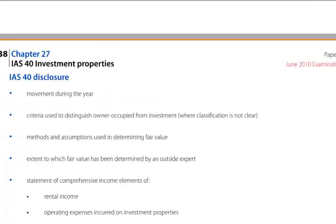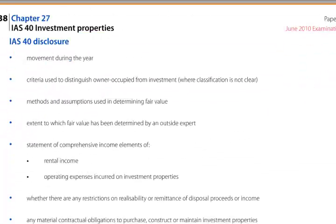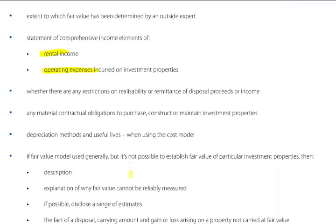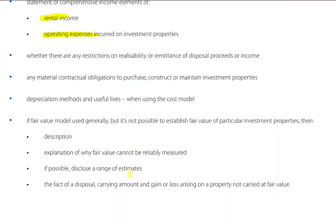For disclosure, report movements during the year, the criteria used to distinguish owner-occupied from investment property where classification isn't clear, and the methods and assumptions used in determining fair value. Also disclose the extent to which fair value has been determined by an outside expert, and statement of comprehensive income elements of rental income and operating expenses incurred on the investment property.